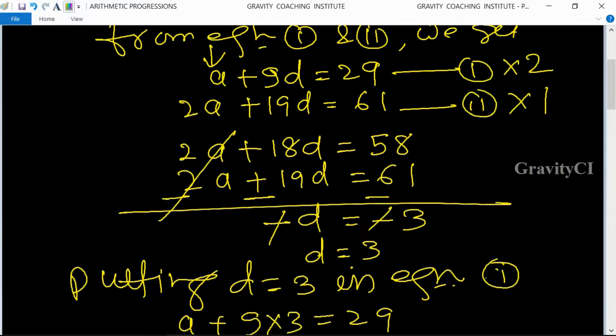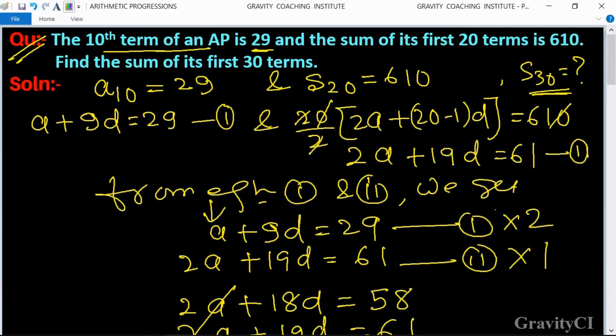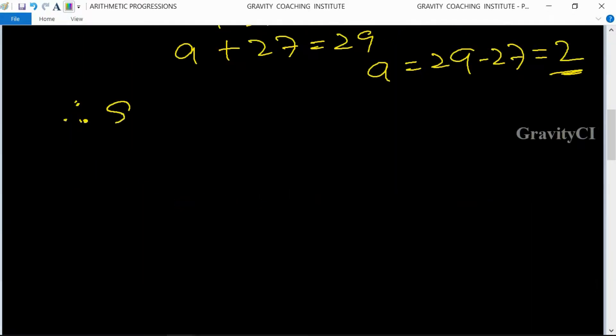A is 2 and D is 3. To find the sum of 30 terms, S_n equals n upon 2 times 2A plus n minus 1 D. So S30 equals 30 upon 2...